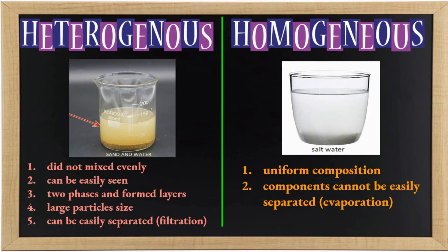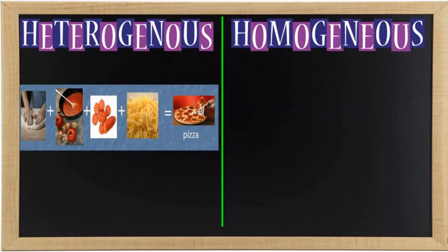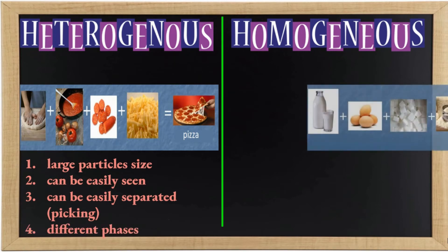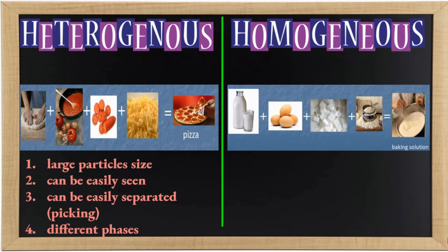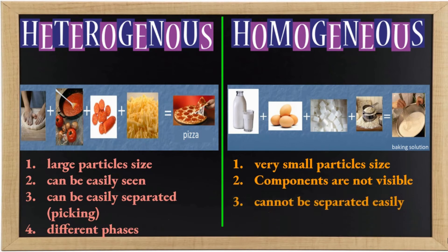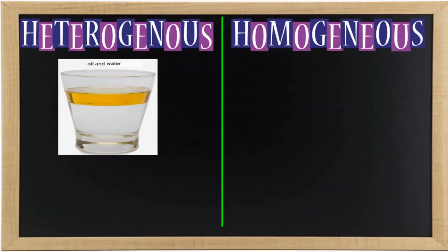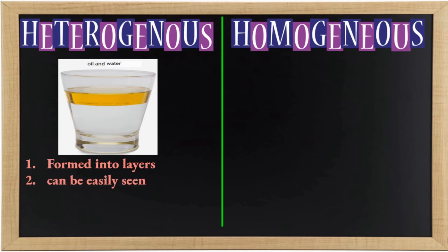A pizza is an example of a heterogeneous mixture because the components are large particles in size, can be easily seen, can be easily separated by picking, and the components are in different phases. A baking solution is an example of a homogeneous mixture because the components are very small particles in size, are not visible, cannot be separated easily, and are in the same phase. Another example of a heterogeneous mixture is a mixture of oil and water — when mixed, it forms distinct layers, the components can be easily seen and separated through density differences, and the components have different phases.